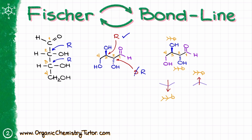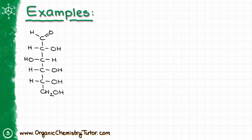If you need to go from the dash-wedge or bond line structure back to the Fischer projection, it's all the same steps but in reverse order. Here is the molecule from the very beginning of the video. To convert that Fischer projection into a bond line structure, step number one is to number my atoms so I have good reference points: one through six. Then the next step is to draw my zigzag with six atoms, which I number from right to left as one, two, three, four, five, and six.